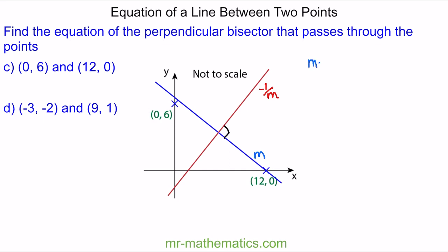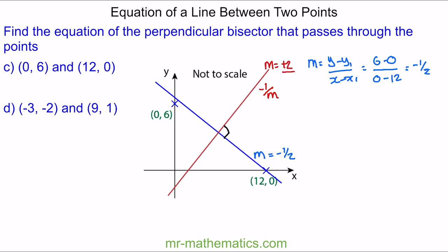I'm going to begin by working out the gradient of the blue line. So m is equal to y minus y1 over x minus x1. The y values are 6 and 0, and the x values are 0 and 12. So the gradient of the blue line is negative one half. This means the gradient of the red line will be positive 2. Now we need to work out the midpoint because we need a coordinate which the red line passes through. Halfway between 0 and 12 is 6, so the x value is 6, and between 0 and 6 is 3, so the midpoint coordinate is (6, 3).